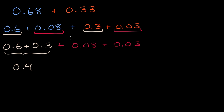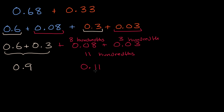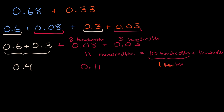So what about the hundredths? Eight-hundredths plus three-hundredths — if I have eight of something and I add three of something, that's going to be eleven of that something: eleven-hundredths. How do we write eleven-hundredths as a decimal? You could write it as 0.11. Or you could view this as equaling ten-hundredths plus one-hundredth. And ten-hundredths is one-tenth, so you could view this as one-tenth and one-hundredth.